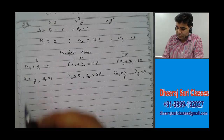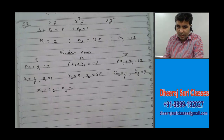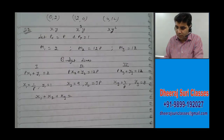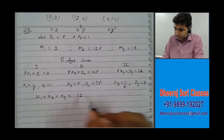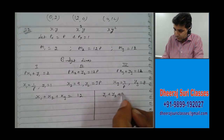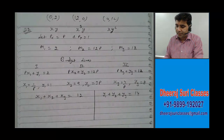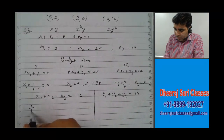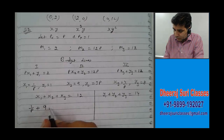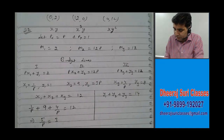So again, x1 plus x2 plus x3 has to equal the total quantity of good 1, which is 0 plus 12 plus 0 equals 12. That gives 1/P plus 9 plus 4/P equals 12, which means 5/P equals 3, so P equals 5/3.